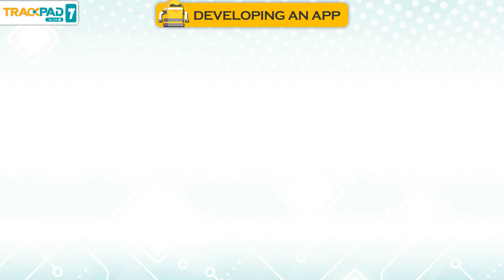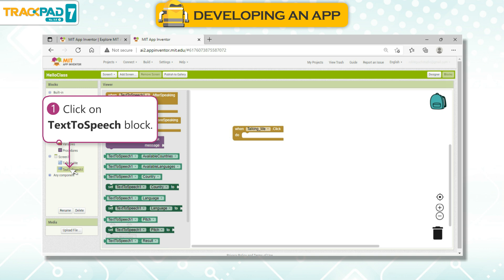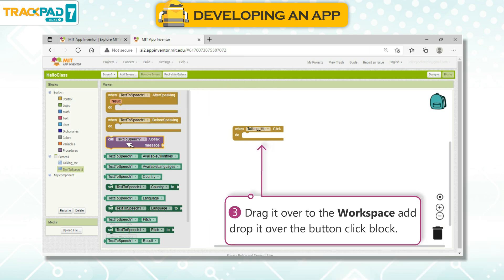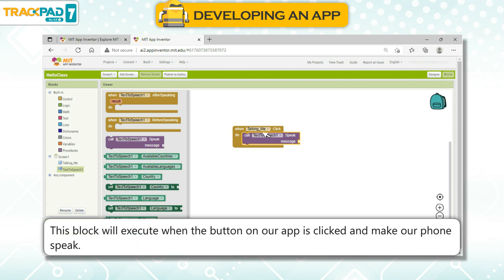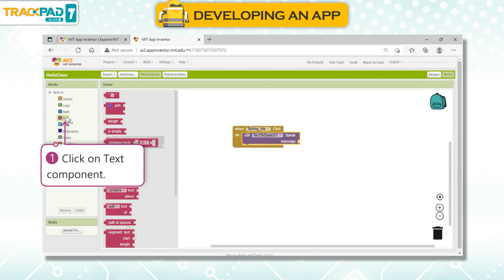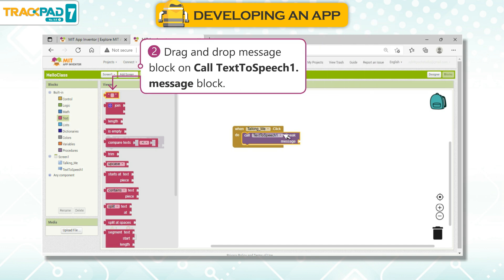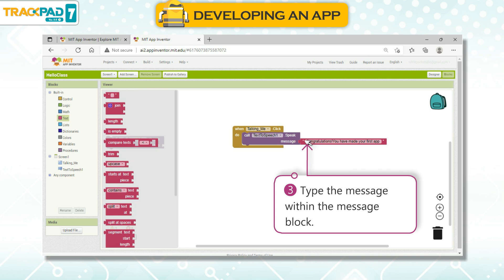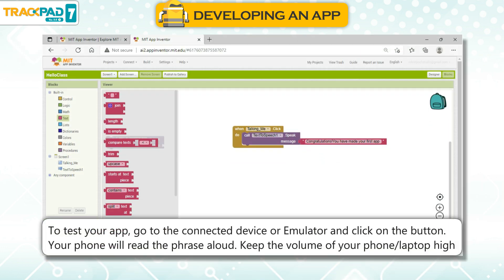Program the text-to-speech action. Click on the text-to-speech block, then click and hold the 'call TextToSpeech1 Speak' block, drag it to the workspace, and drop it over the button click block. This block will execute when the button is clicked and make our phone speak. Click on the text component, drag and drop the message block onto the 'call TextToSpeech1 message' block, and type the message within the message block. To test your app, go to the connected device or emulator and click on the button — your phone will read the phrase aloud. Keep the volume of your phone or laptop high.